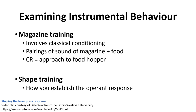These operant procedures are all well and good, but lever pressing, key pecking, and hopping into a feeder aren't behaviors that occur naturally. They would have had to be trained — we have to show the organism what to do. That's where we get shaping: shaping behavior to get them to do things they wouldn't normally do. That's how we establish our operant response — pressing the lever, pecking the key, or flying into the feeder.